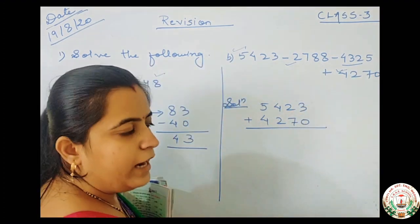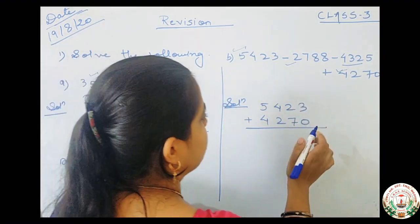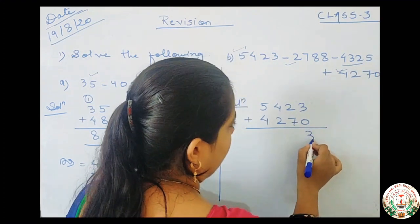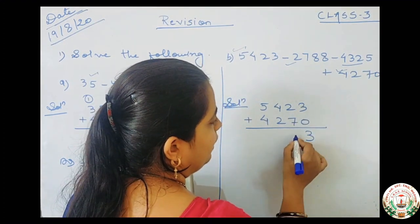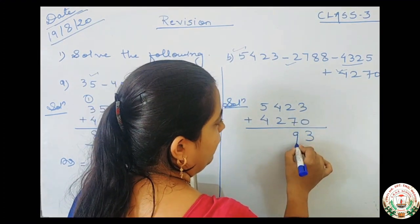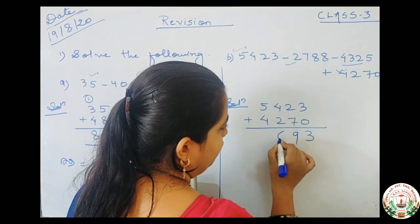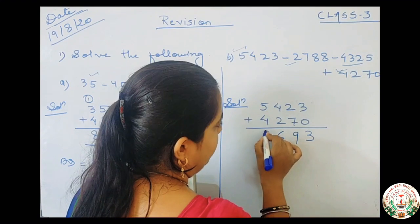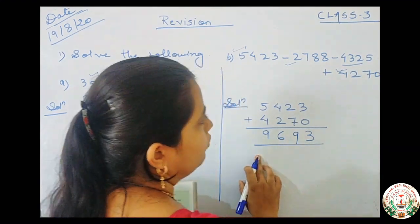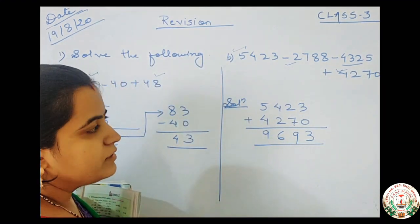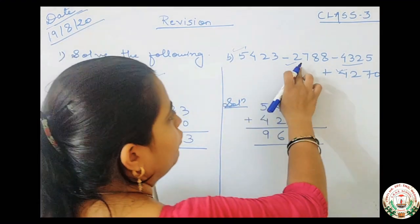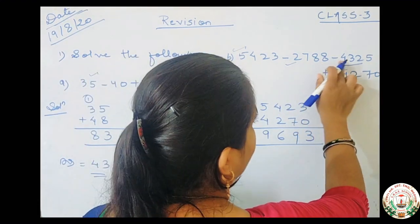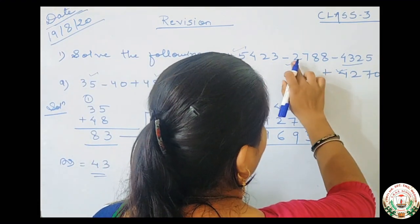First we add: 3 plus 0 is 3, 7 plus 2 is 9, 4 plus 2 is 6, 5 plus 4 is 9. So the addition result is 9693. The addition part is completed. Then we subtract one by one.